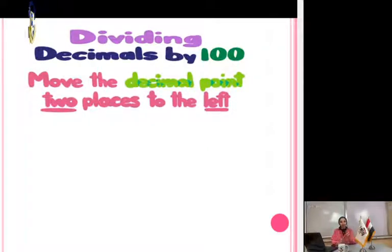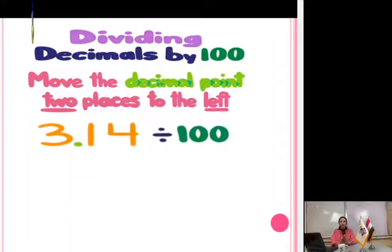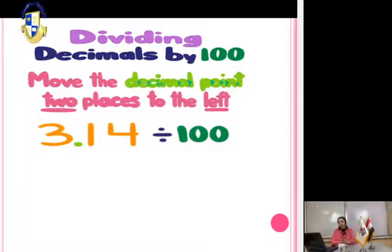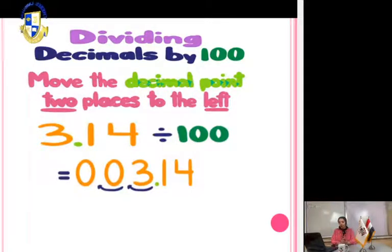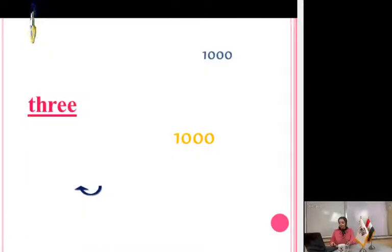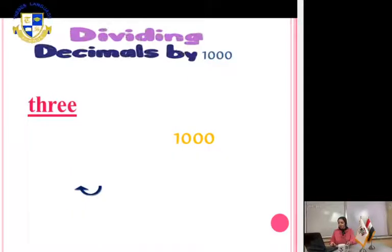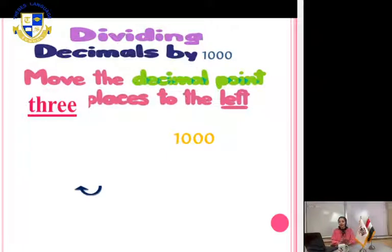We have only one digit on the left, so put cover zeros to move the decimal point. The answer will be 0.0314.